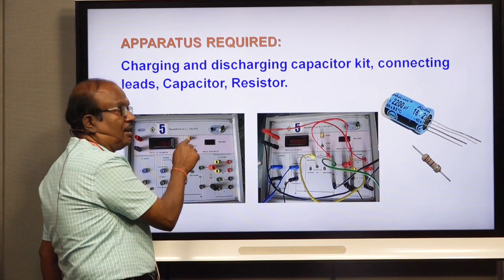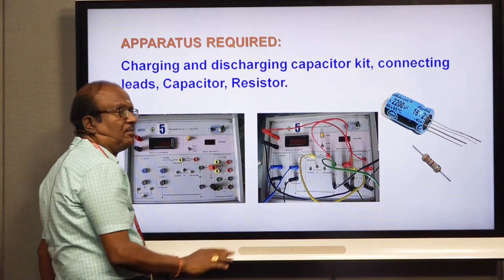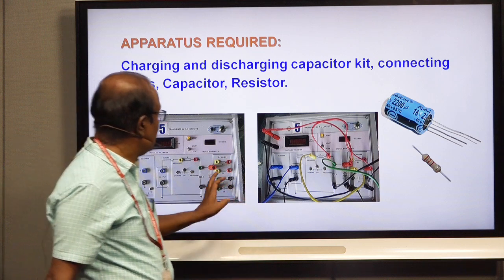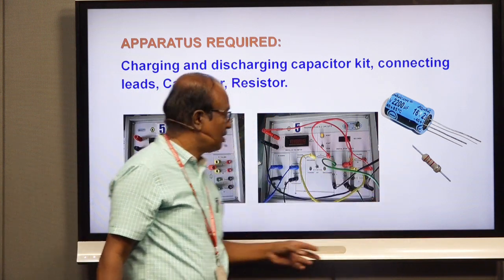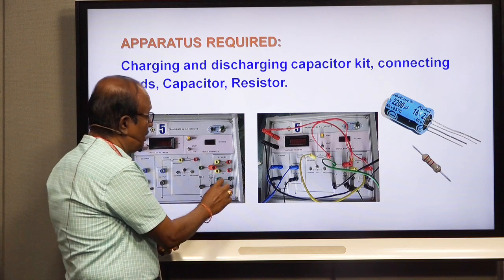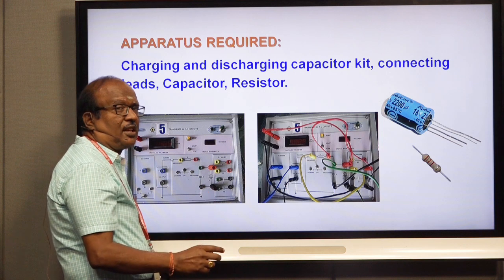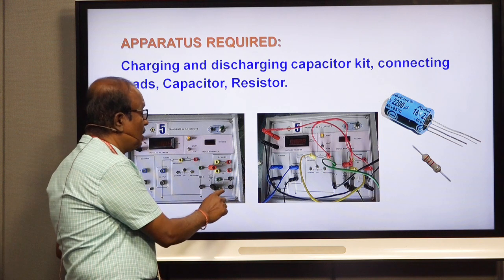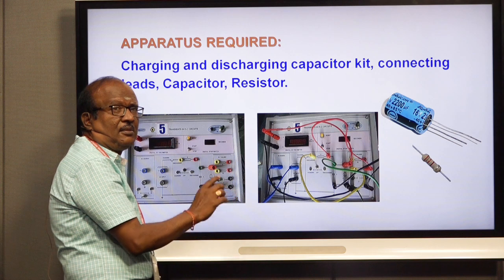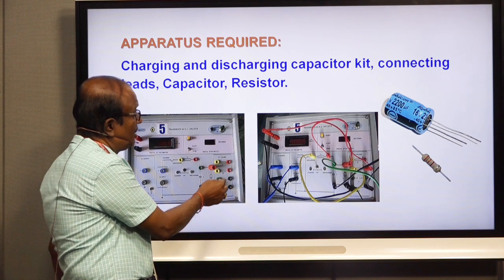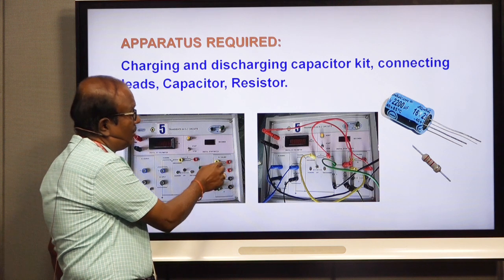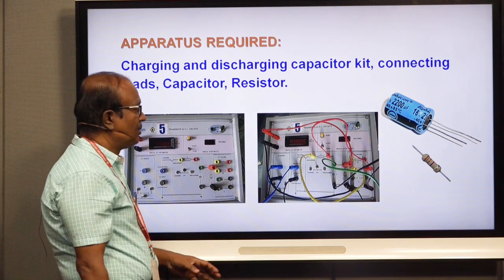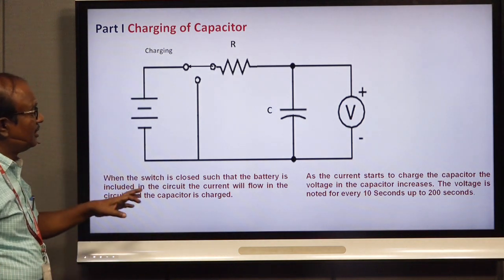Once the experiment is finished you can stop the clock, and to repeat the experiment press the reset button so that it returns to 0. We use connecting wires to connect the inbuilt capacitors and resistors. Different student groups will be assigned different combinations such as C1R1, C2R2, C1R2, and C2R1 — four combinations in total.